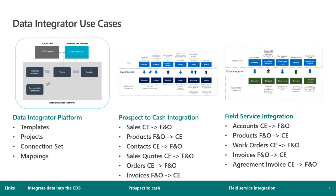With the Prospect to Cash and Field Service Integration — two examples of templates — you can quickly and easily start integrating your customer engagement data with your Finance and Operations data. It's quite flexible and there are a lot of templates. For example, sales in CE map over to F&O, but products from F&O go into CE. Remember that it's one-directional, which is a big difference from the DualWrite functionality.